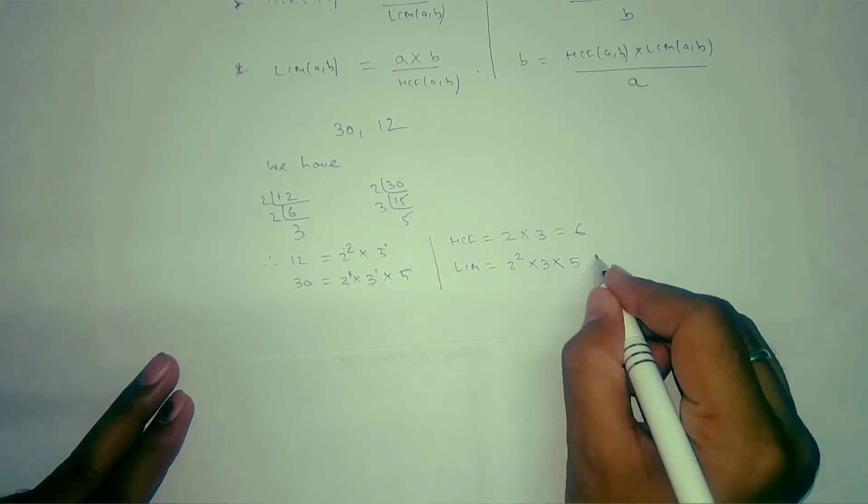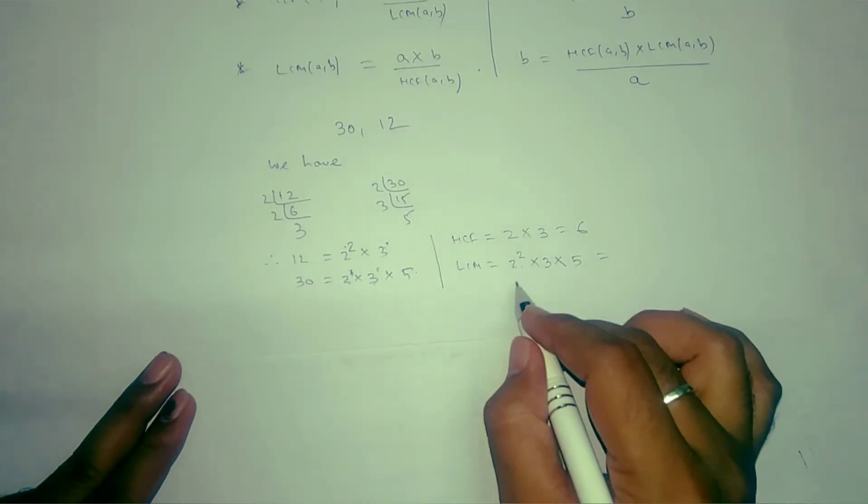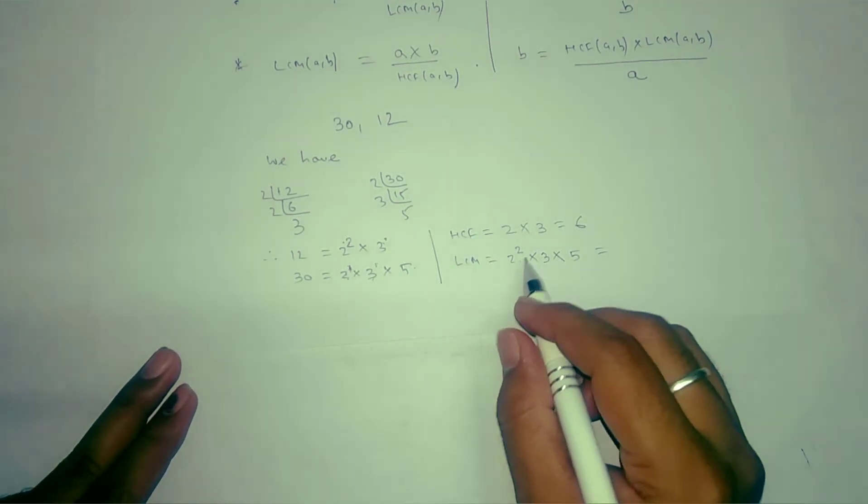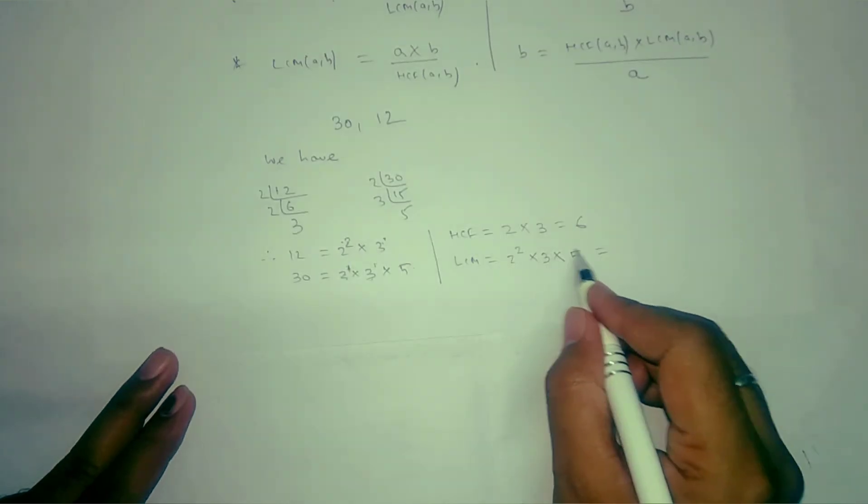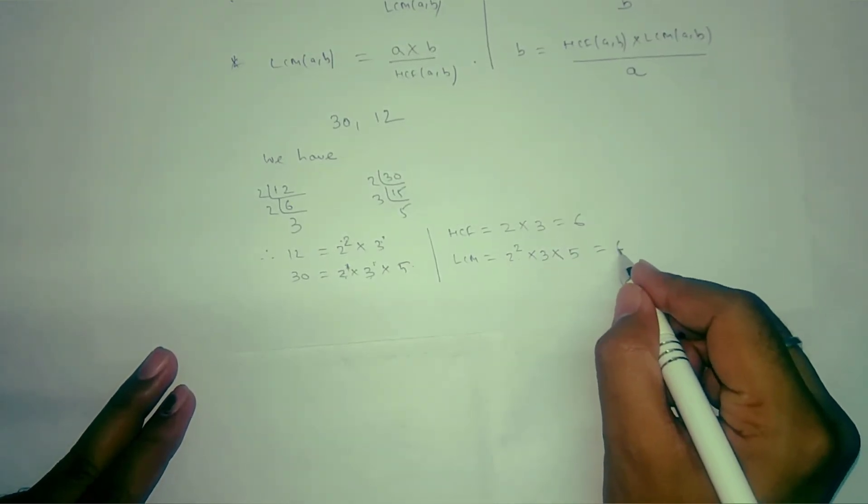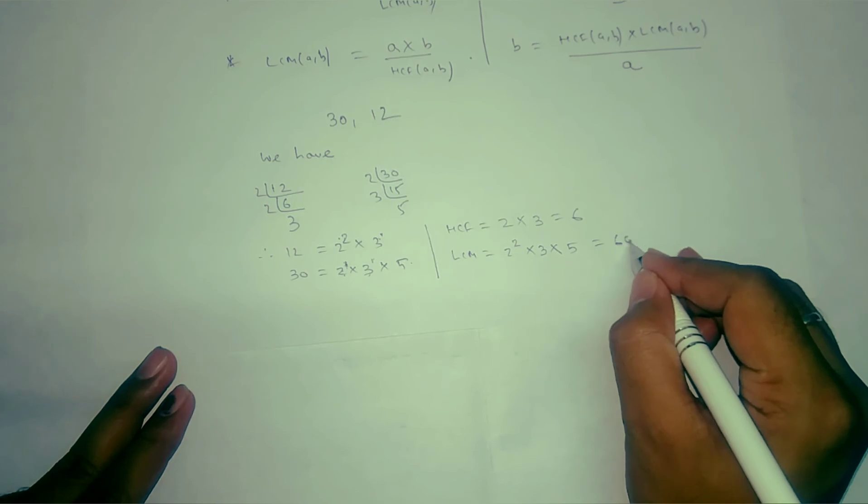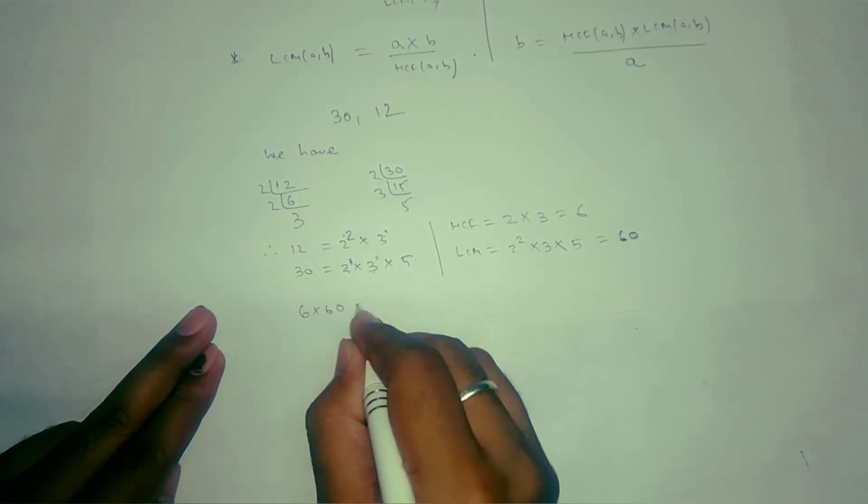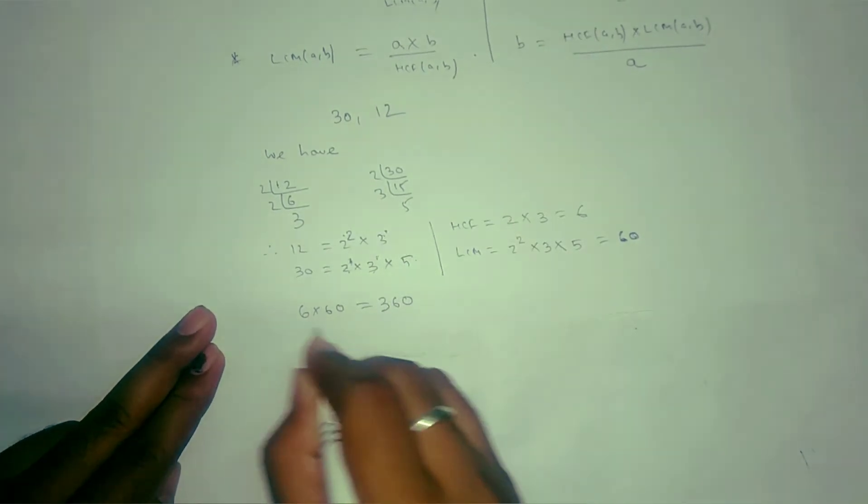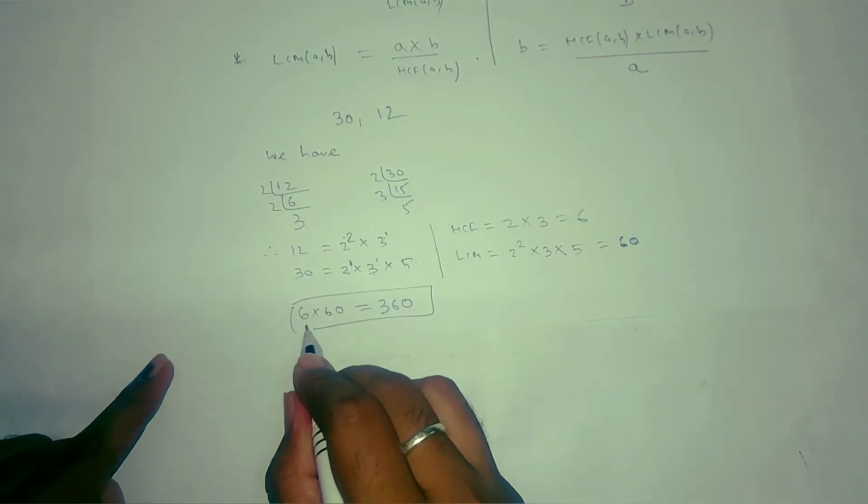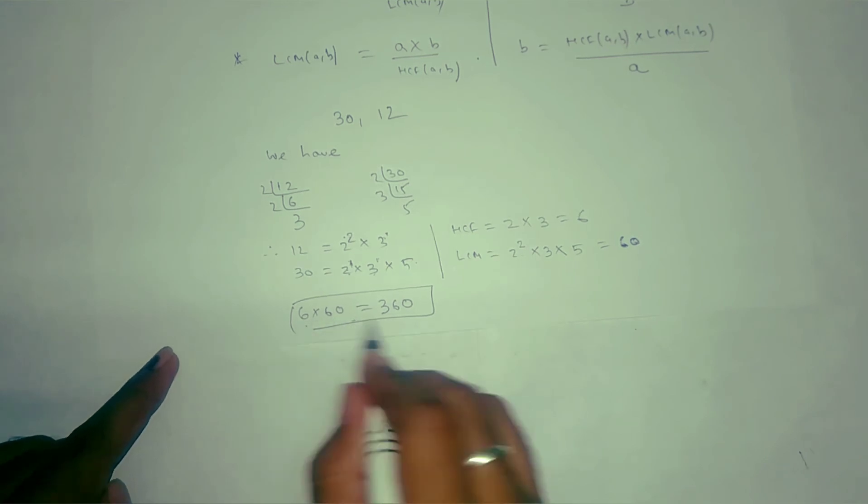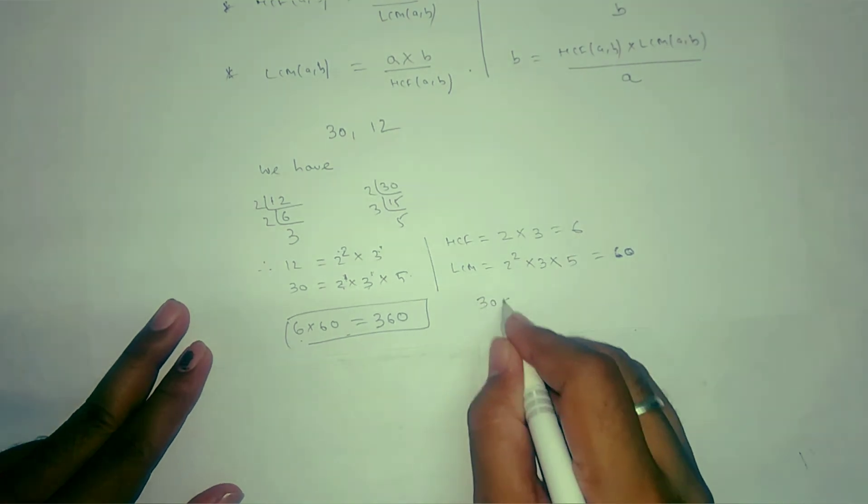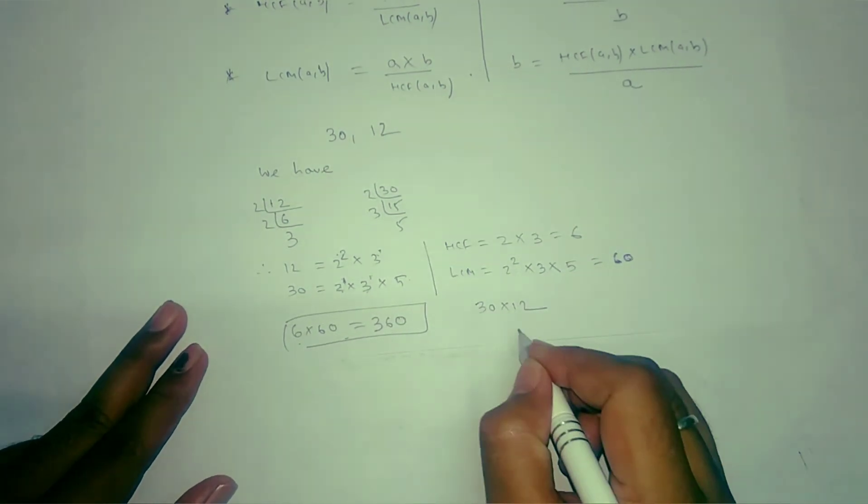For LCM, our result will be 60. If we multiply 6 times 60, we get 360. Now if we multiply the two numbers, 30 times 12, that is the product of the two numbers, you will find you will get 360. Have you seen? Both are equal. This way you can find it. Thank you.